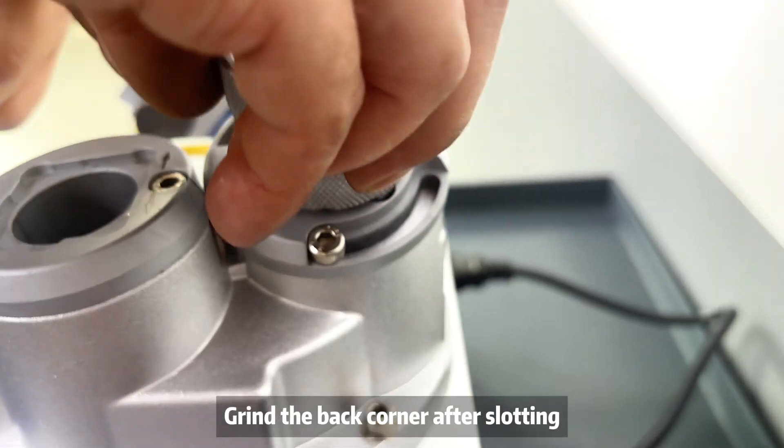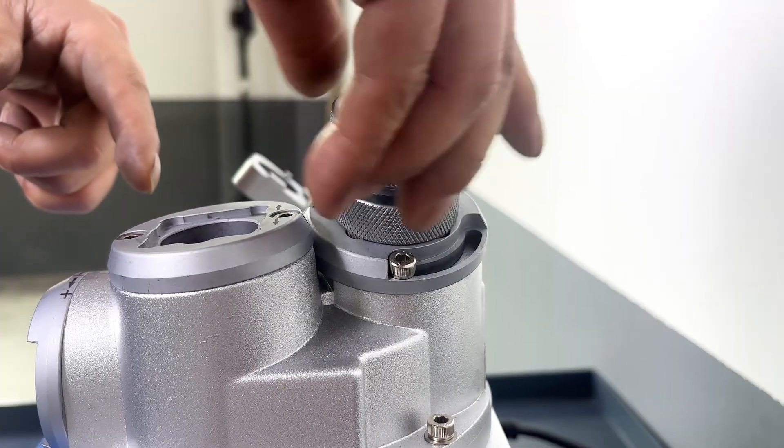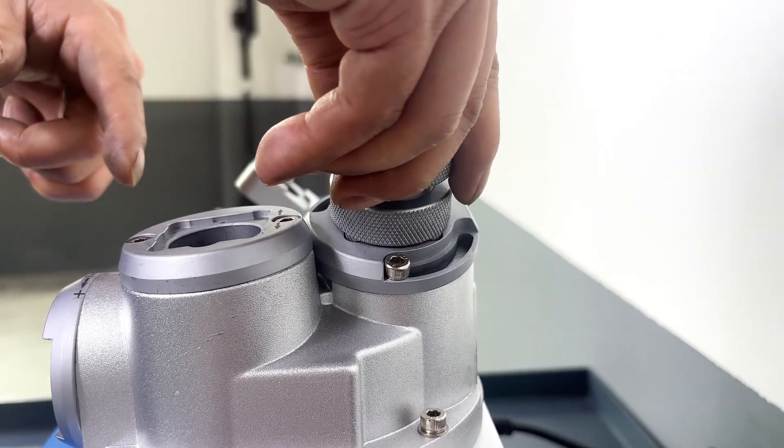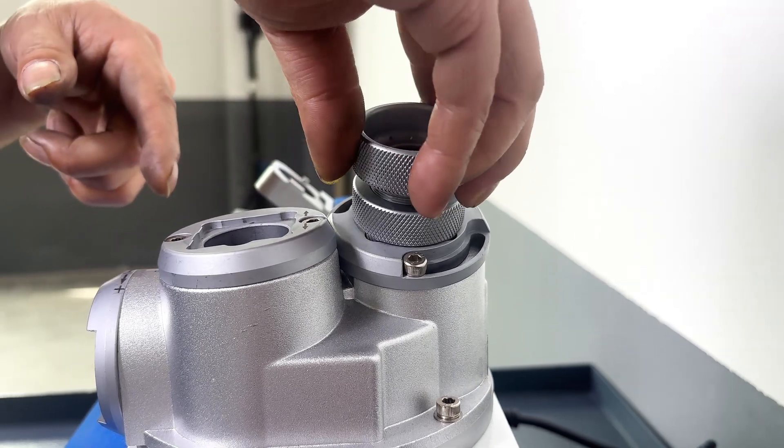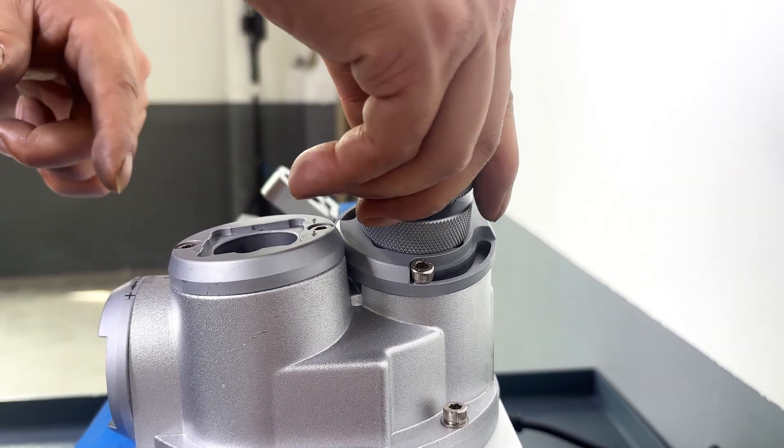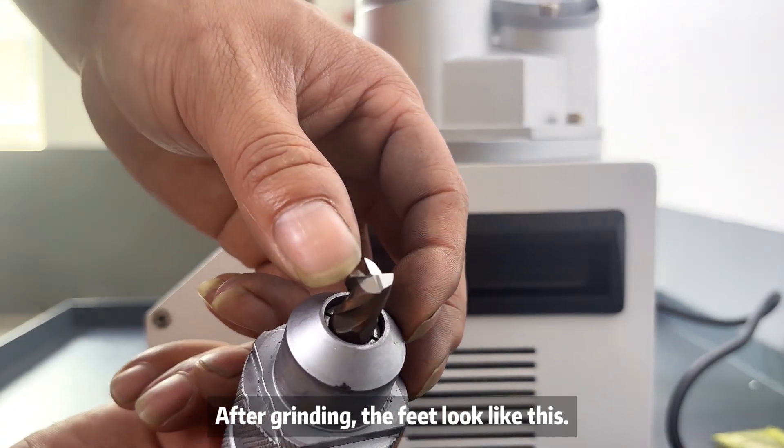Ground the back corner after slotting. Just put it in. After grinding, the feet look like this.